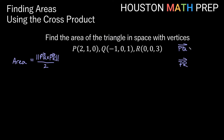Let's figure out PQ first — that's terminal point minus initial point. PQ = (-1−2, 0−1, 1−0) = (-3, -1, 1). Then PR = (0−2, 0−1, 3−0) = (-2, -1, 3). Next we'll find the cross product of these, then find the magnitude and divide by 2.